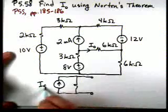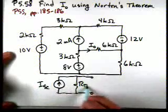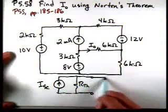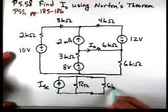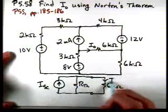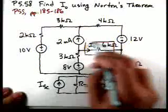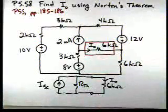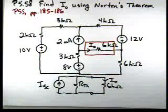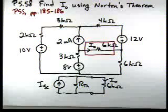The Norton equivalent will have I short-circuit and R_N. We'll have a 6-kilohm resistor connected at the terminals, and there's the current I0. We're going to treat this as our load, remove it from the circuit, and this time calculate I short-circuit and R_N. We could calculate the open-circuit voltage, but let's calculate I short-circuit and R_N.